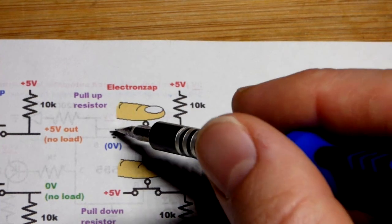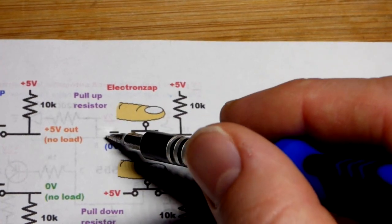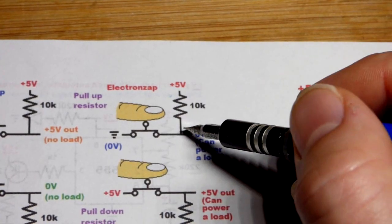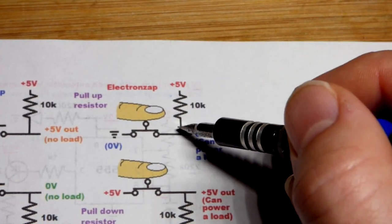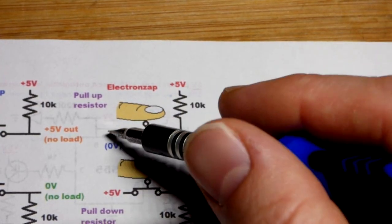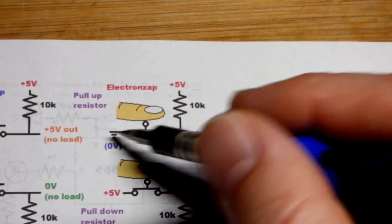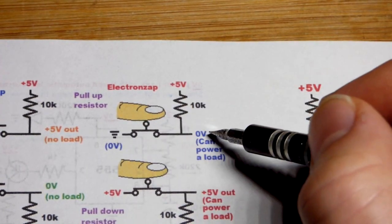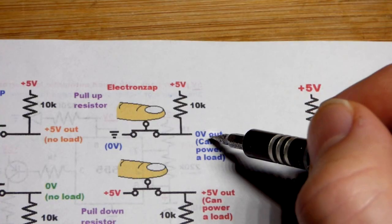So there is going to be current flow from the positive supply to ground right there. So you do need a resistor of some value. Lower value will hold 5 volts better before the switch is closed. But when the switch is closed, that's going to be current that is wasted going that way. The input is going to see a direct connection to ground.